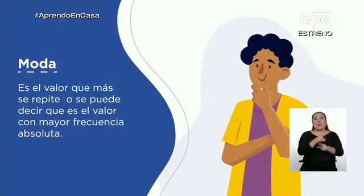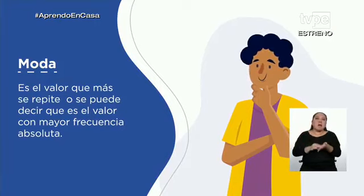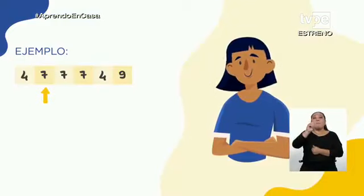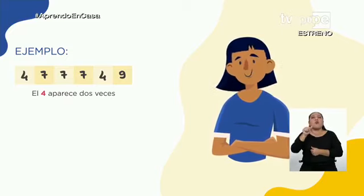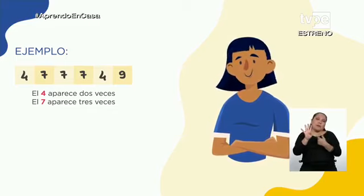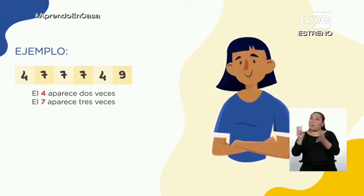Vamos a terminar ahora con la moda, que es el valor que más se repite. También se puede decir que es el valor con mayor frecuencia absoluta. Por ejemplo, si me piden hallar la moda de los datos: 4, 7, 7, 7, 4, 9. Al ojo, ¿cuál es la moda? El 4 aparece dos veces. El 7 aparece tres veces. Entonces, el 7 es el valor que más se repite. El valor de la moda es 7.